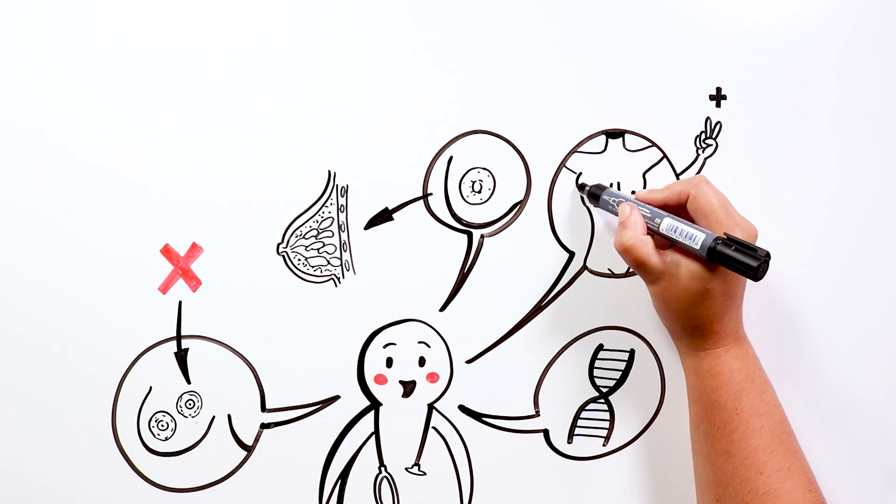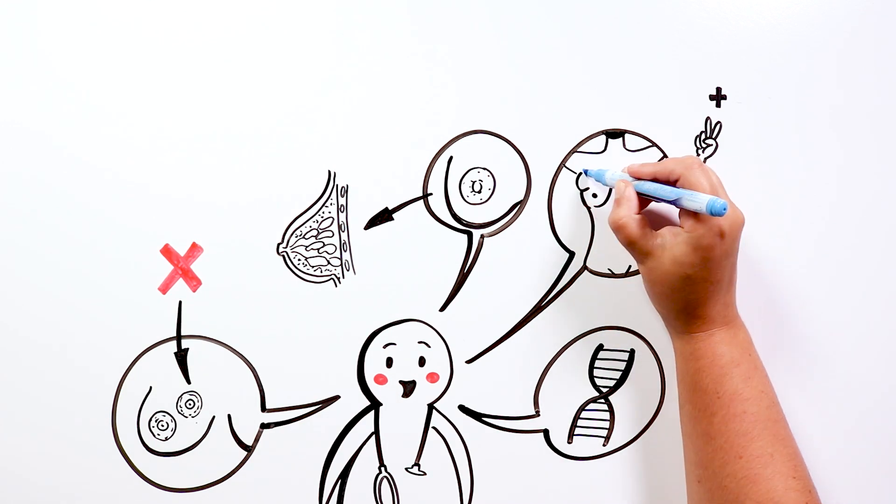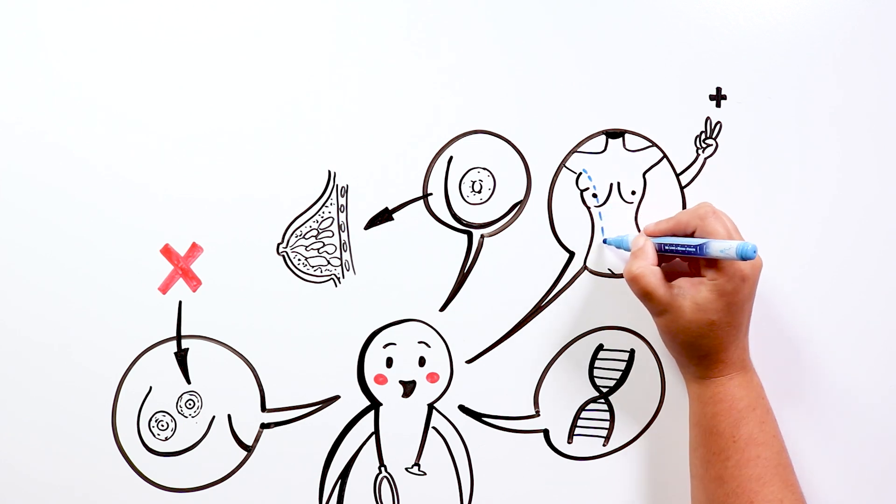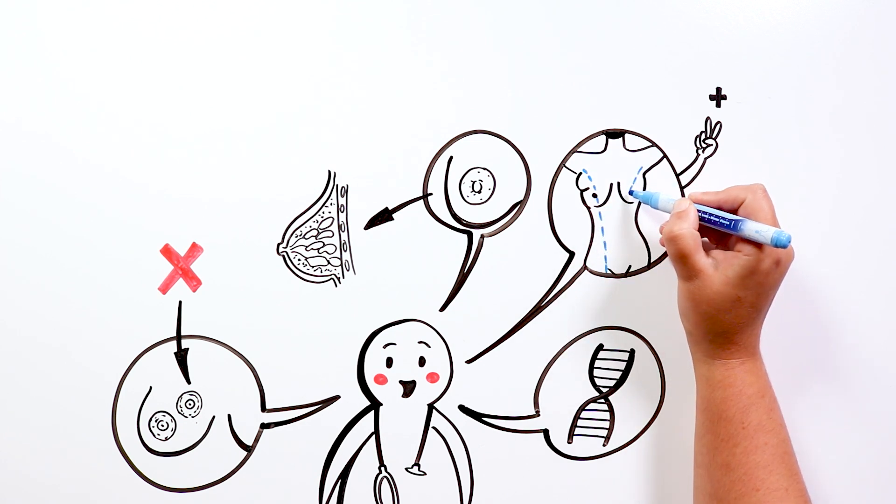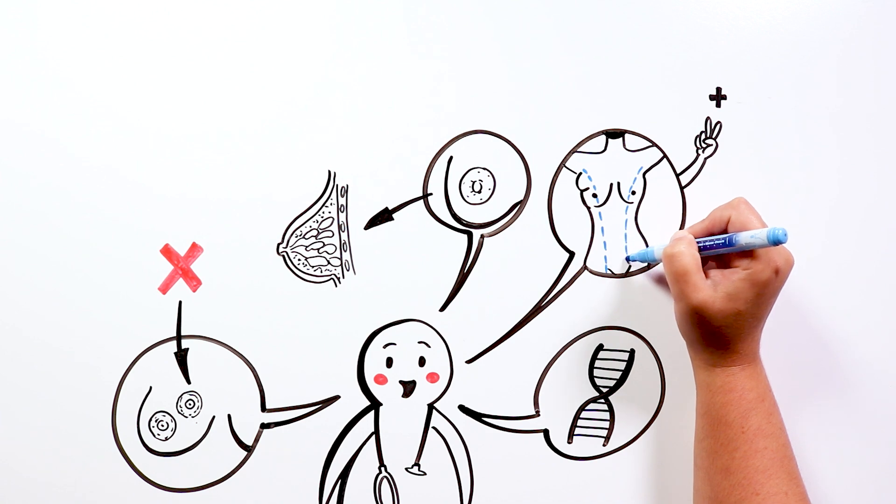In both cases, these extra breasts or nipples are usually found following the so-called mammary lines, which are imaginary lines that go from the armpit to the groin.